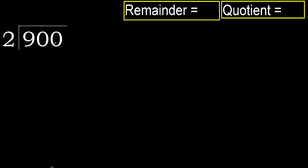900 divided by 2. 9 is not less, therefore with 9, 2 multiplied by which number is nearest but not greater.